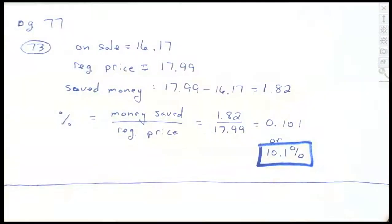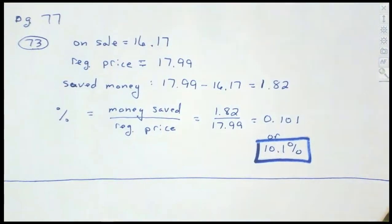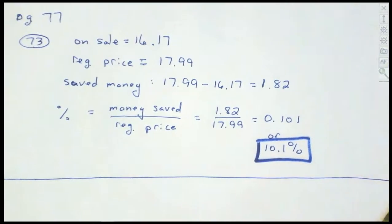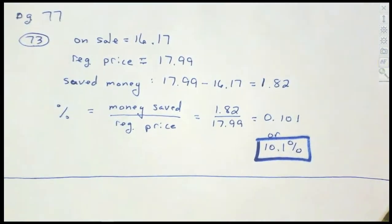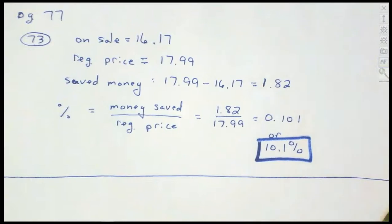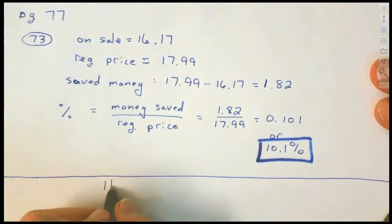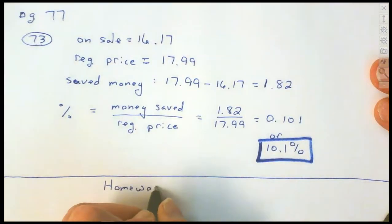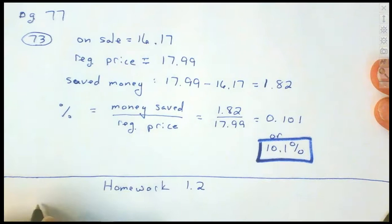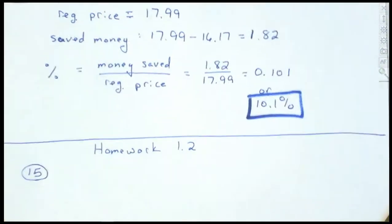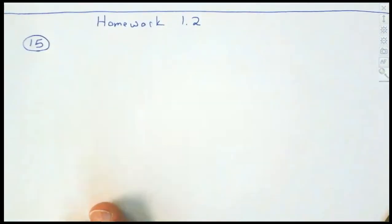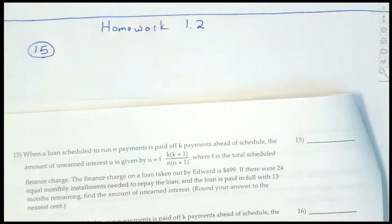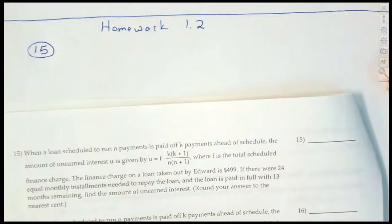Let's look at some homework questions. We'll look at question 15, because 15 and 16 are very similar — they're just using a formula. If you can do 15, you'll be able to do 16. This is not difficult; it's just a matter of finding out what the pieces are and plugging them into a formula.